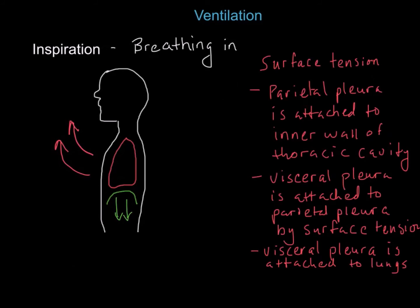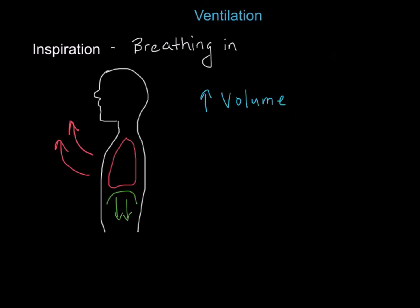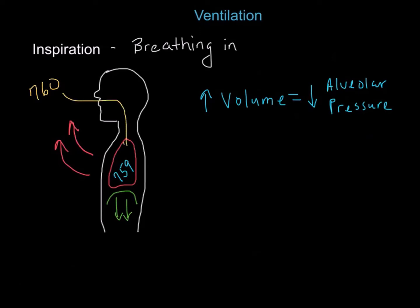As mentioned in a previous lecture, surface tension plays a major role in ventilation. As the thoracic cavity moves, it pulls on the parietal pleura, which is attached to the visceral pleura through surface tension. The visceral pleura then pulls on the lungs, increasing the size and volume of the lungs. This decreases alveolar pressure to roughly 759 millimeters of mercury. Because atmospheric pressure is greater than alveolar pressure, air moves into the lungs, flowing from high pressure to low pressure. Inspiration is an active process because the muscles that increase the size of the lungs require energy.